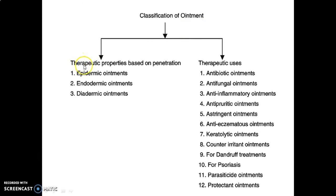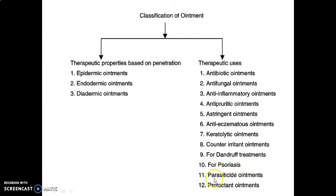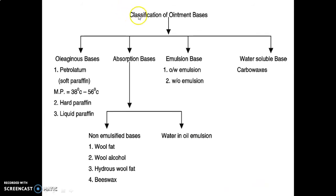We will discuss the classification of ointments in detail. There are two classes: the first based on therapeutic properties based on penetration, and the second based on therapeutic uses. The first class is further classified into three types: epidermic ointments, endodermic ointments, and diadermic ointments, according to the layer of skin. Therapeutic uses include antibacterial, antifungal, anti-inflammatory, antipruritic, astringent, anti-eczematous, keratolytic, counter-irritant ointments, treatments for dandruff and psoriasis, parasiticide ointments, and protectant ointments.